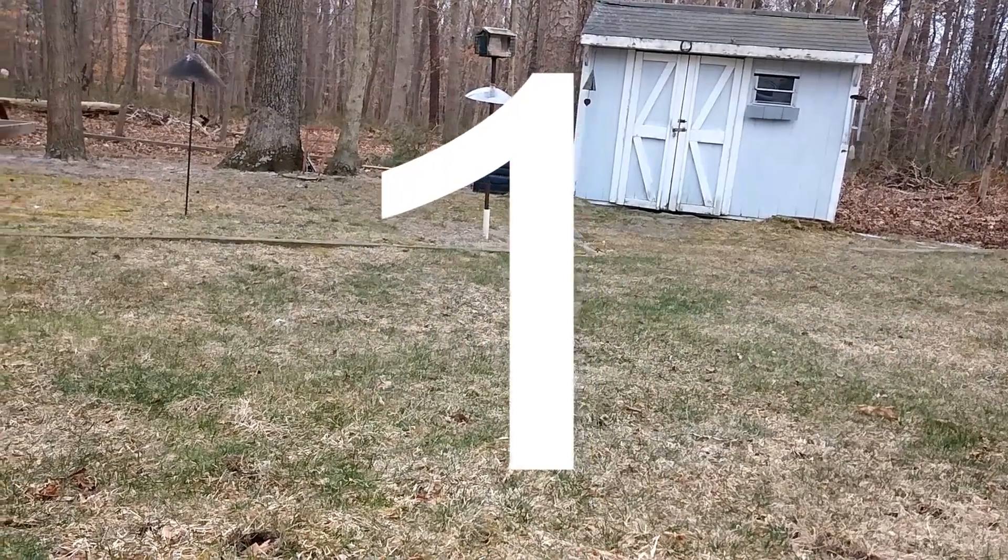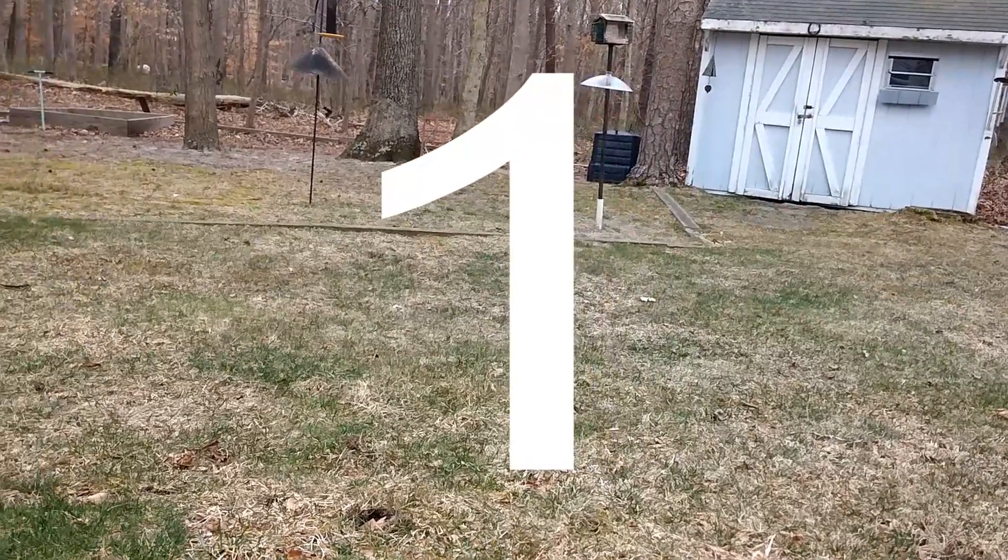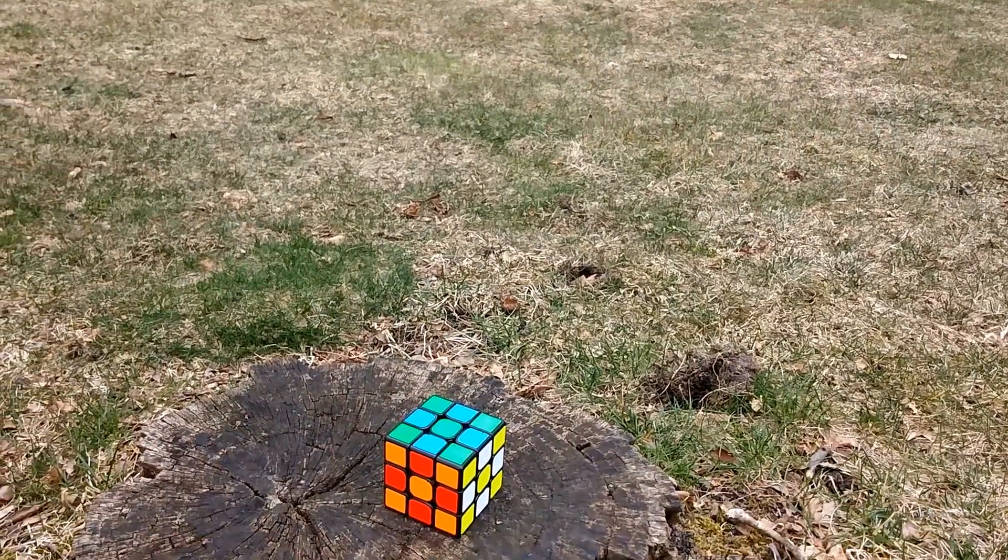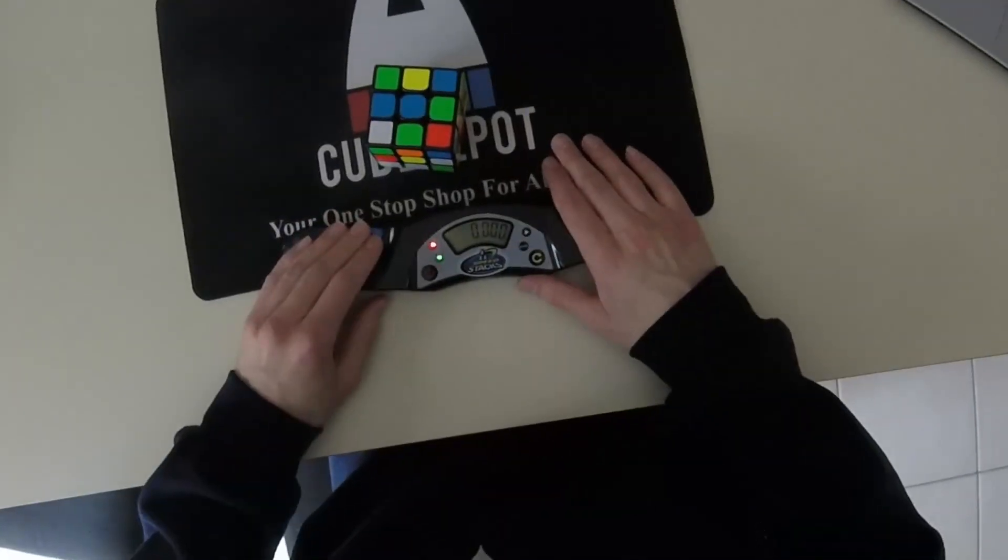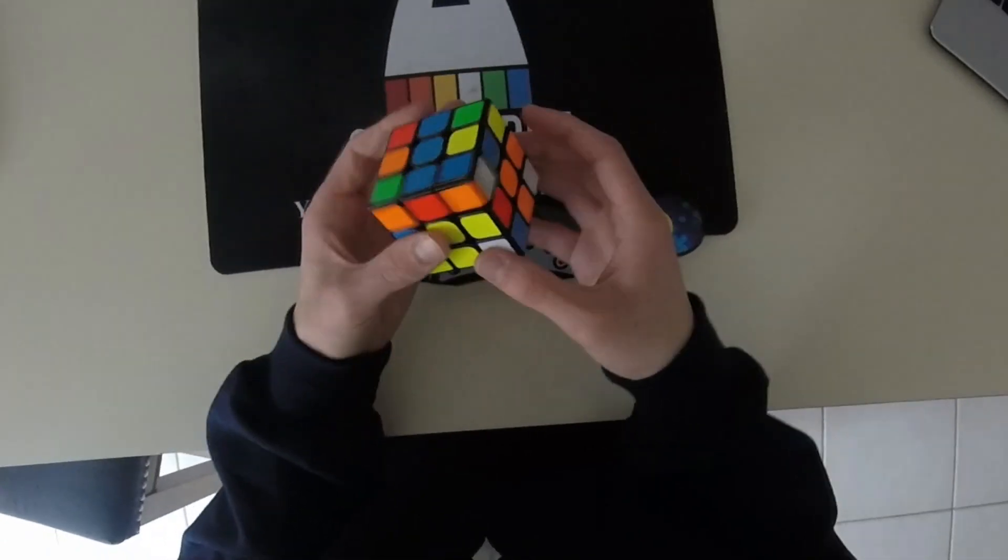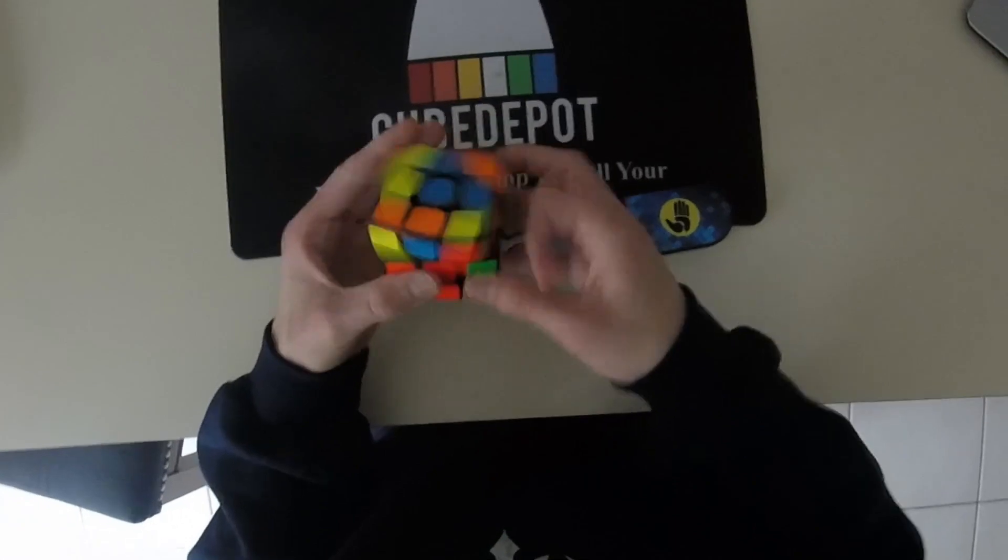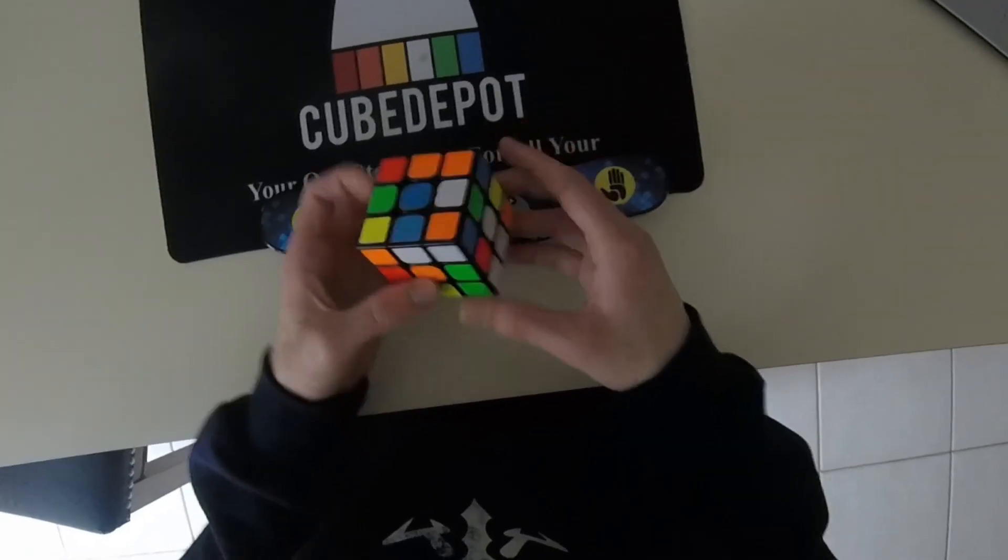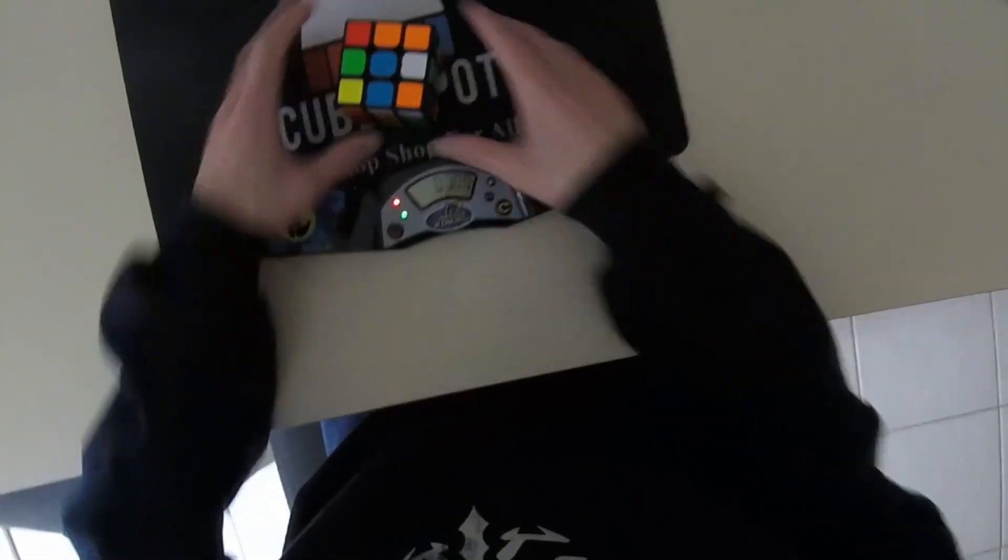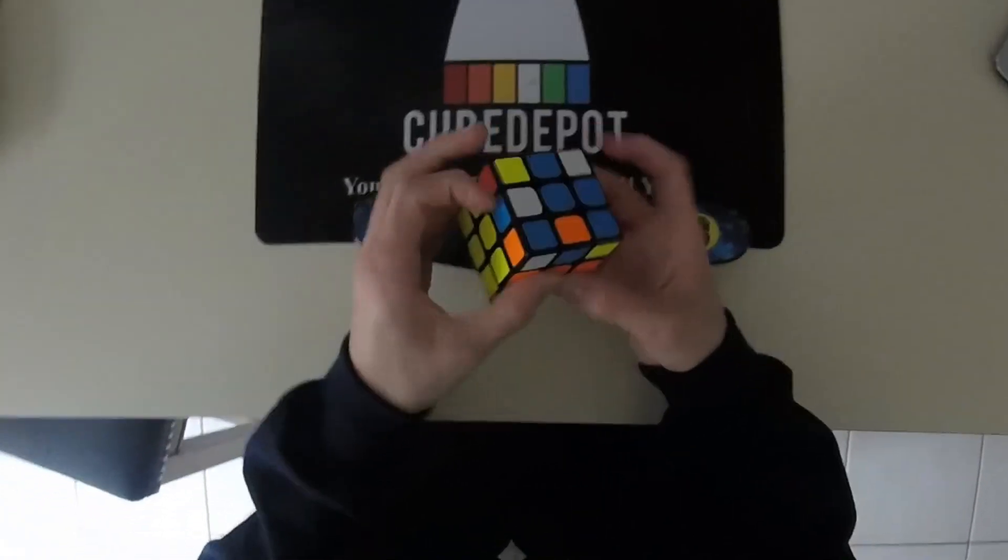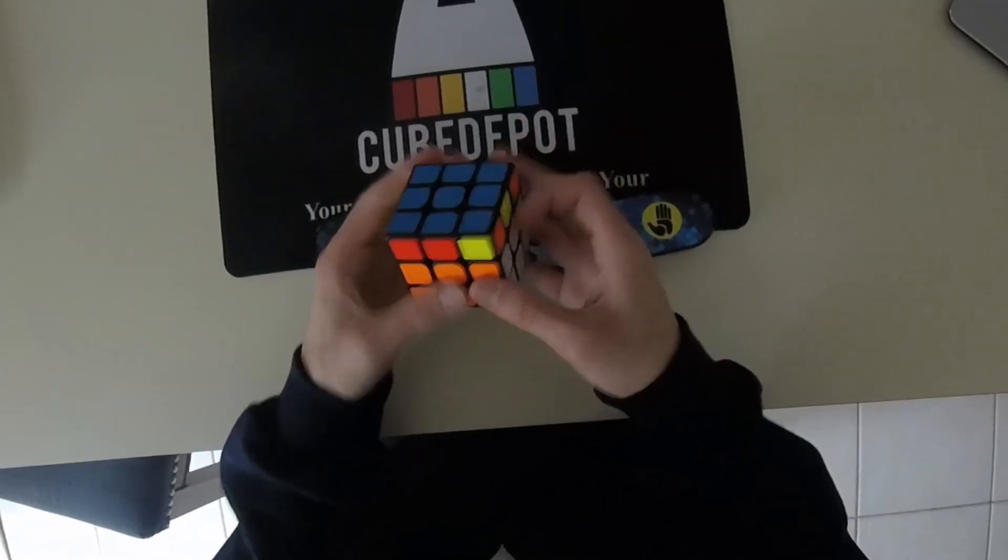And finally, my number one favorite WCA event is... 3x3. Dang, I've gotten boring. Like I said, when I was writing this list, there were three events in the running for first place: Pyraminx, FMC, and 3x3. Although Pyraminx would have easily taken it for most of my cubing career, I couldn't put it at number one anymore because of my lack of recent focus on it. As far as FMC goes, I couldn't put it at number one either because it's such a recent development in my cubing career, so it hasn't exactly proven its worth to me yet. So, by process of elimination, we have our winner, the one that started it all, the 3x3 Rubik's Cube.